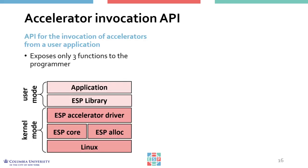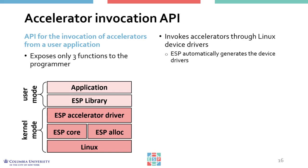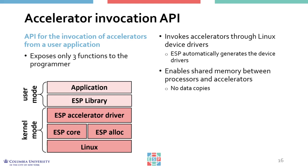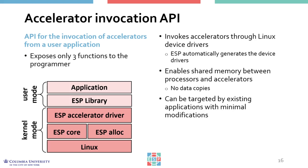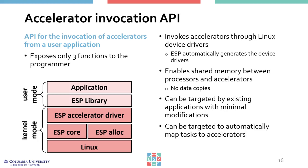Programming heterogeneous SoCs is knowingly challenging, especially when there are multiple different accelerators to be managed. For this purpose, we developed a software API to hide the details of memory allocation, accelerator invocation, and synchronization from user-space software. This new API exposes only three functions to the programmer: to allocate memory, invoke accelerators, and deallocate memory. Underneath, the accelerator invocation is done through a Linux device driver automatically generated by ESP. The memory allocation API function allows the program to allocate data that can be truly shared between processors and accelerators without the need for data copies. The API is simple enough to be targeted by existing applications with minimal modifications, and it could also be targeted automatically by, for example, a compiler.